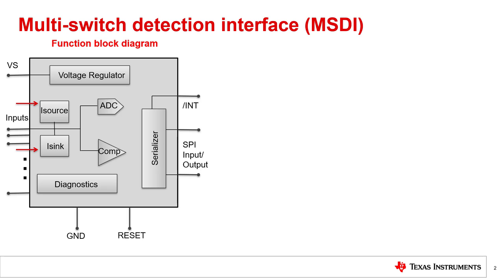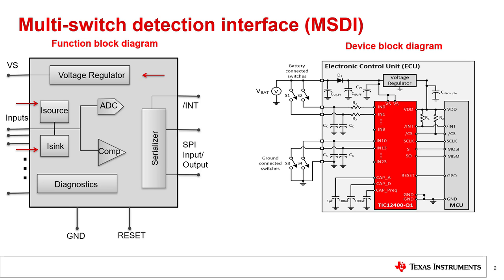It monitors the voltage drop across the switch, which will be different for a switch that is open or closed. Immediately following the end of the configuration, the switches will be polled and their default state stored. Once a switch state is detected, the device reports the status of the switches to the MCU through a status register that can be polled and/or a hardware interrupt pin. Texas Instruments offers three MSDI products, with all devices being capable of monitoring 24 direct switch inputs in a 12-volt system.